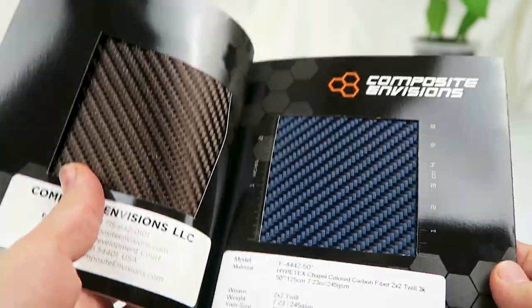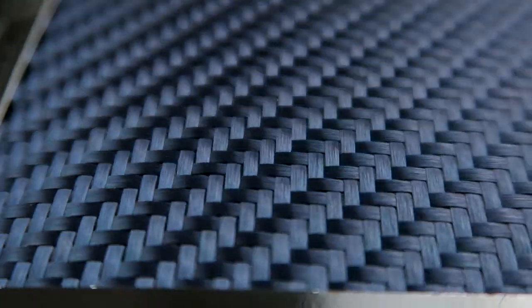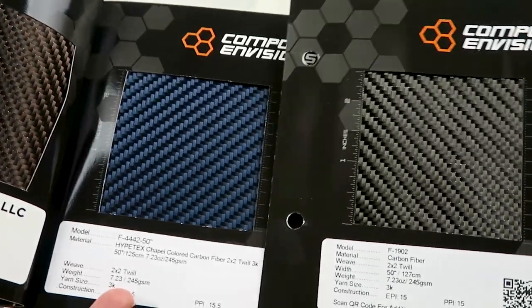This second sample is blue called Chapel. Here that one is compared to a plain piece of carbon fiber.